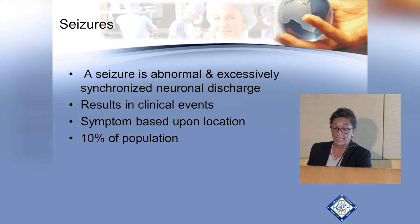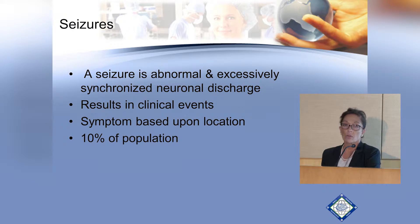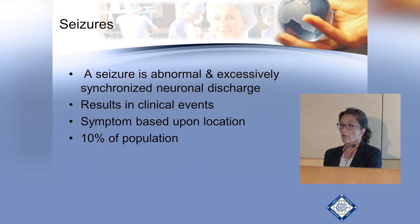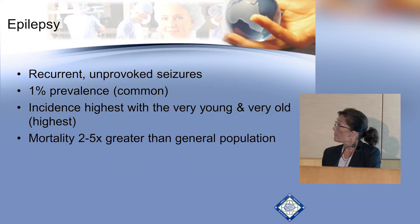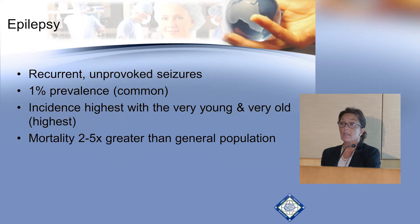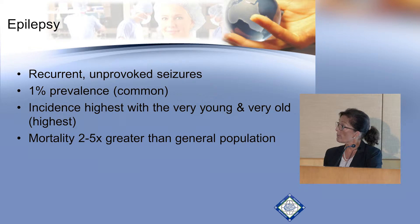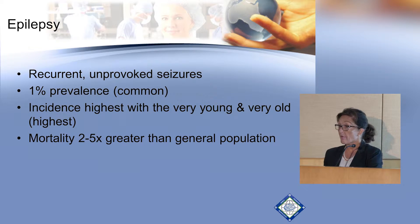A seizure is an abnormal and excessively synchronized neurodischarge, and the symptoms are based upon what part of the brain is involved. One out of ten individuals worldwide will have a seizure at some point in their life, and most of the time it is not repeated. One percent of the population have epilepsy — that is the prevalence of epilepsy at any given time.